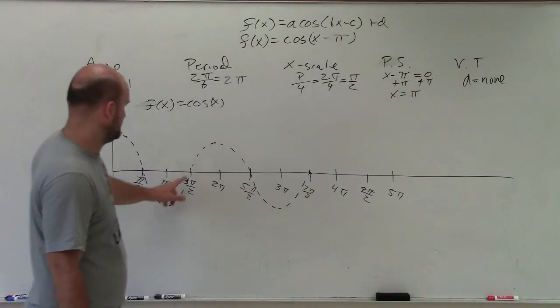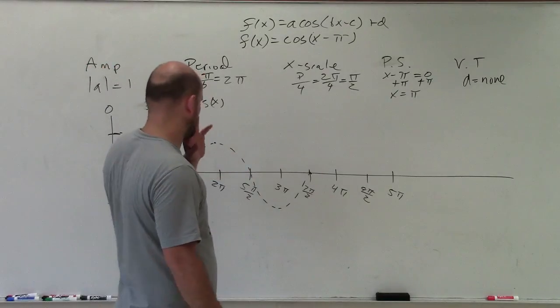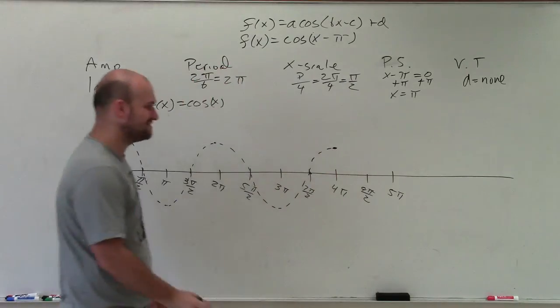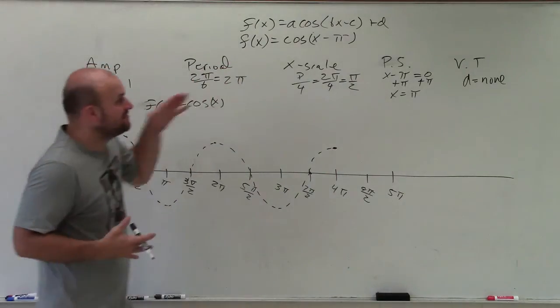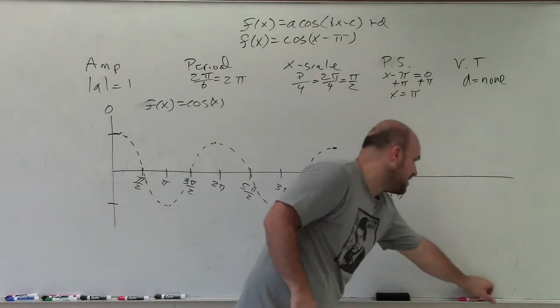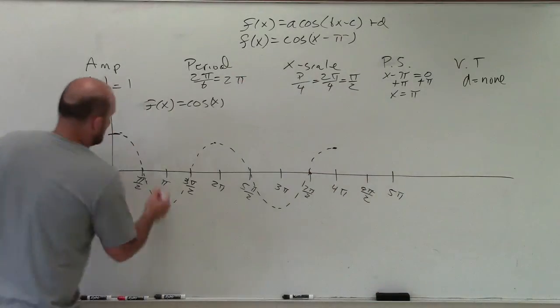Two periods. No, that's wrong. I skipped one. I didn't go all the way. There we go. OK, two periods. Done. But now it's saying the phase shift is at π. So rather than starting at 0, I'm now going to do the exact same graph, but at π.